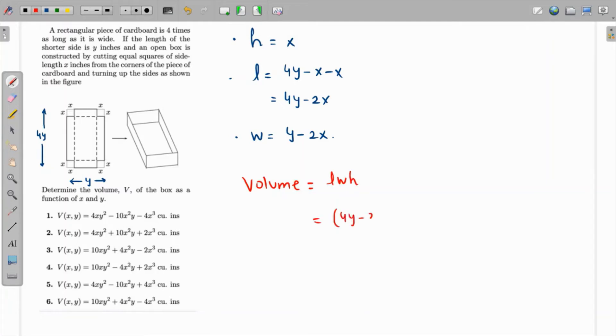So the volume will now become lwh, which will be equal to l is 4y minus 2x, w is y minus 2x, and height is x. So that will become 4y times y is 4y² minus 8xy, and these two multiply - this is minus 2xy, and this will multiply to give us plus 4x², and this should be multiplied with x.